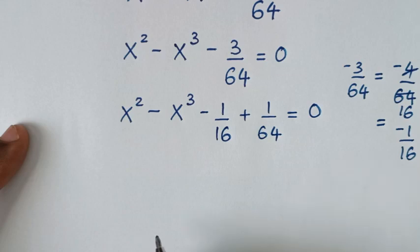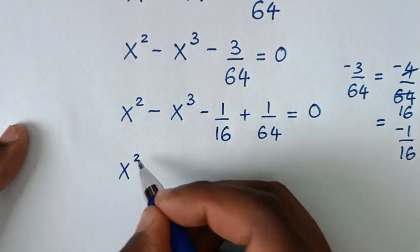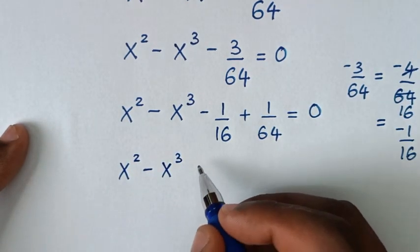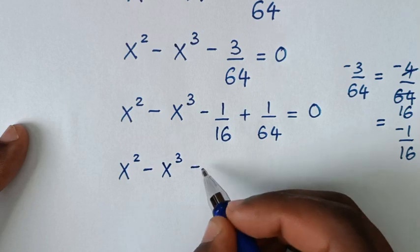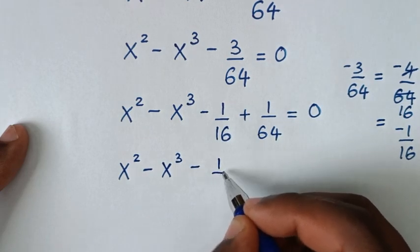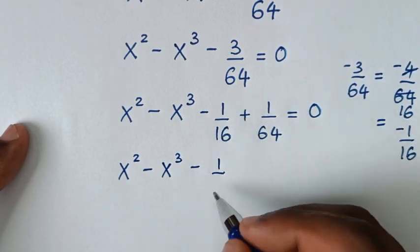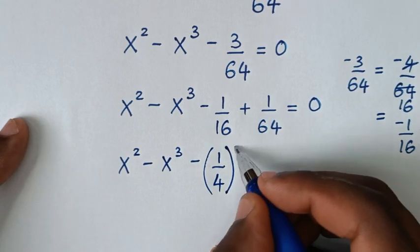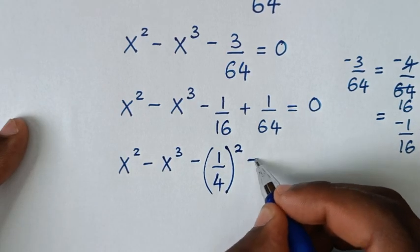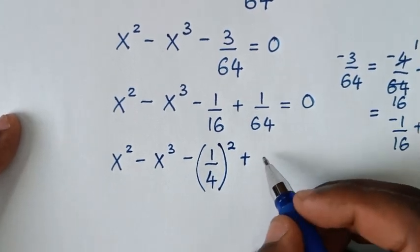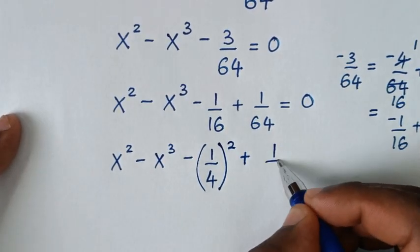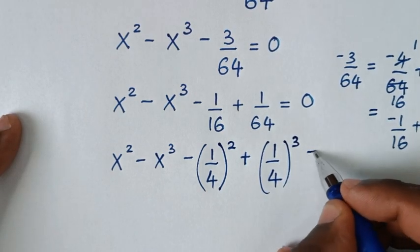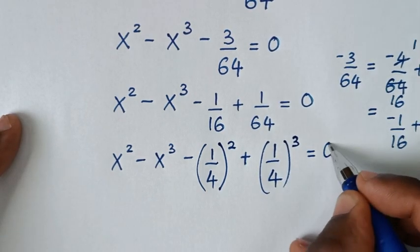Then in the next step, it will be x squared minus x cubed. Here, minus 1 over 16 is the same as (1/4) squared, and plus 1 over 64 is the same as (1/4) cubed, and is equal to 0.